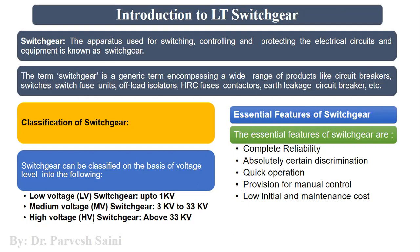Though there is an option for manual control, there are also provisions in switchgear for automatic control. Automatic control here means the automatic tripping of the switchgear device. Switchgear is basically a generic term which is used for the various types of devices used to protect the circuits.